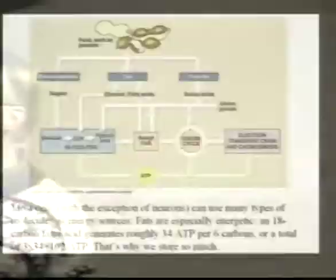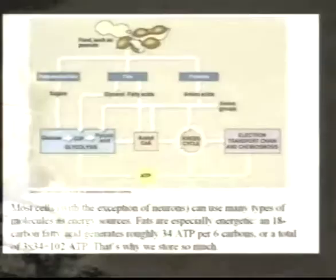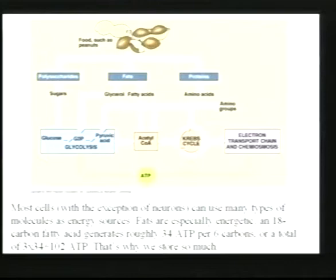The best energy source is fatty acids. You get around 36 ATPs per glucose, but around 120 or more ATPs per fatty acid — more carbons, more hydrogen ions, more high-energy electrons. For every acetyl-CoA that goes through this cycle you're getting about 34 ATPs; for a fatty acid that's 18 carbons in length, that's nine times through the reaction — 34 times nine. No wonder our bodies store excess materials as fats — it's a great energy source. We will start Chapter 7 in our next session, which is photosynthesis.